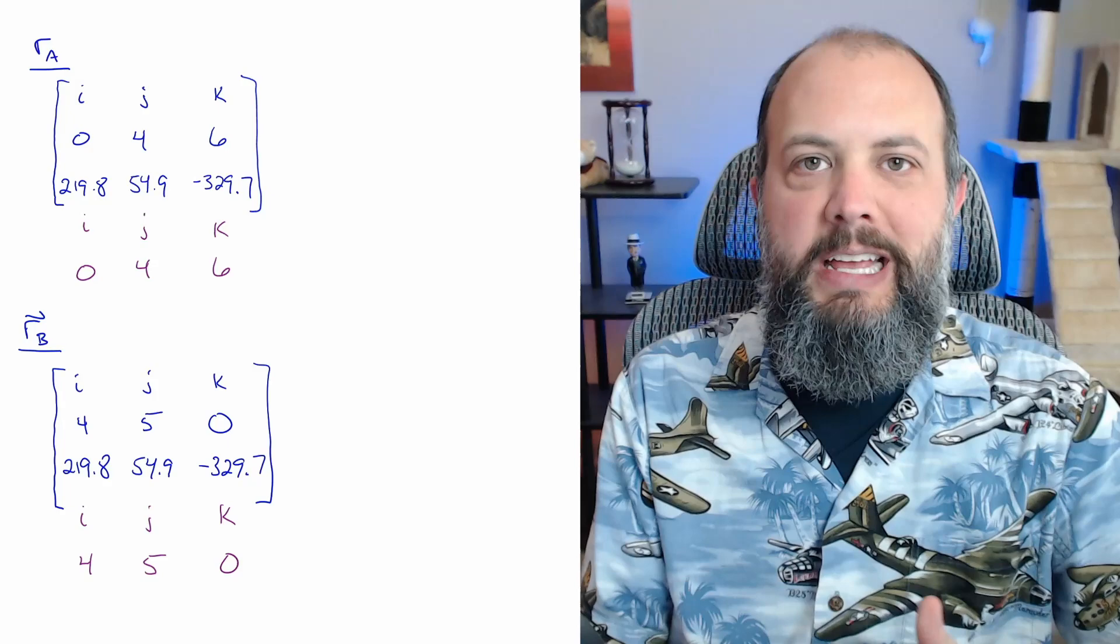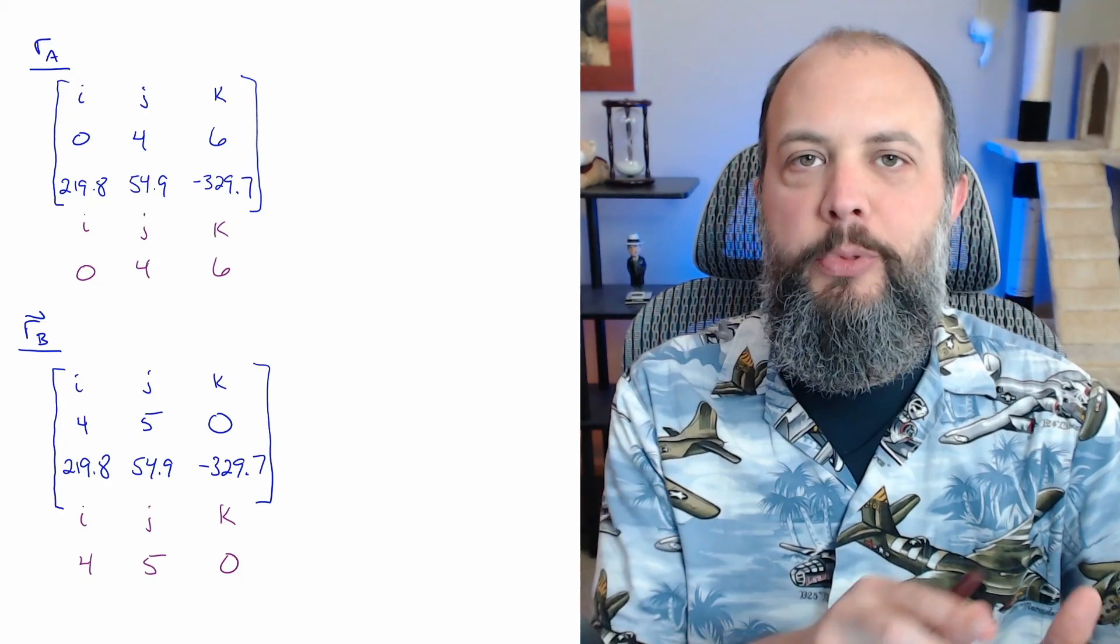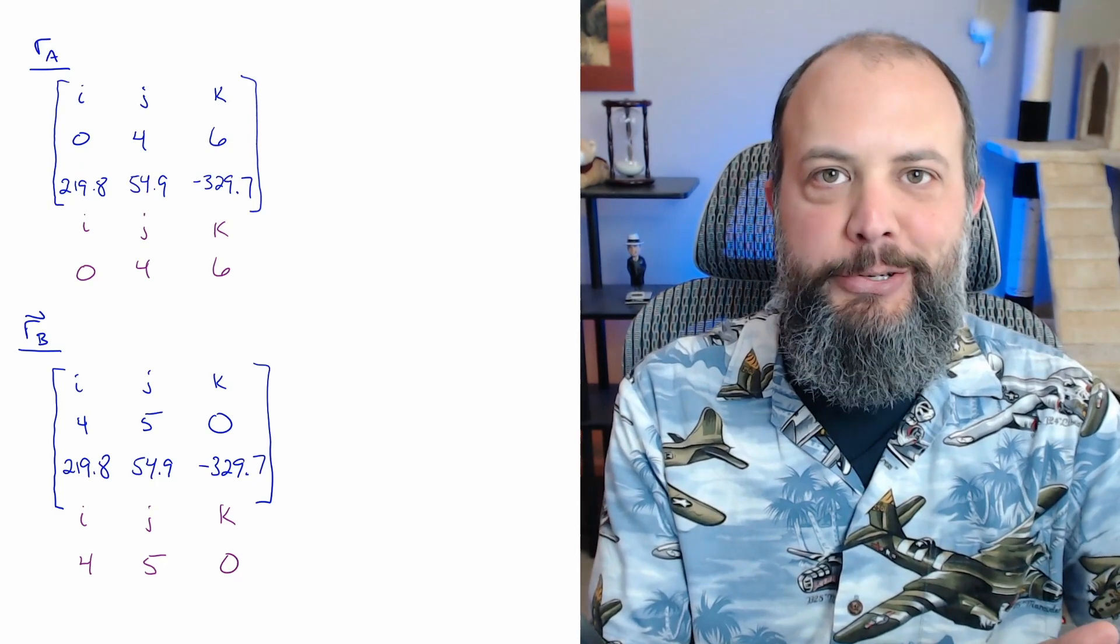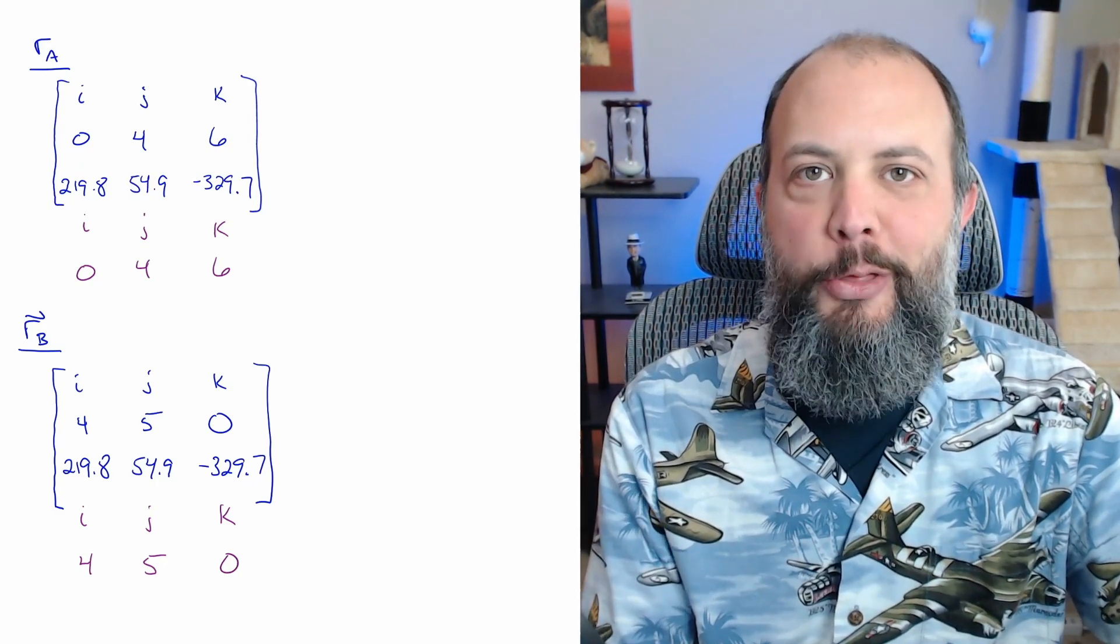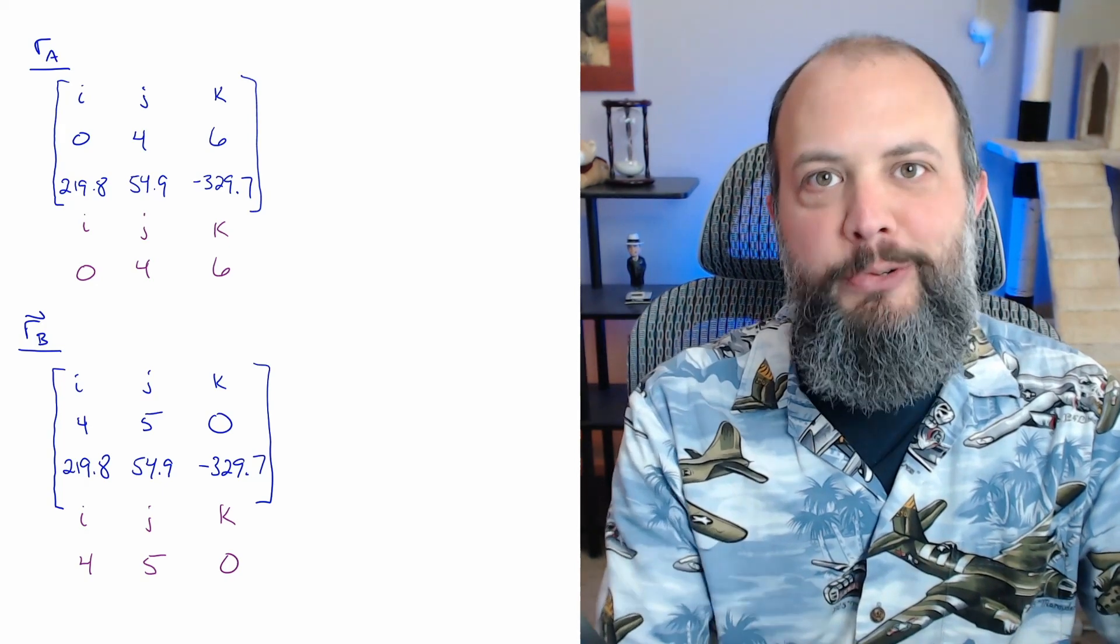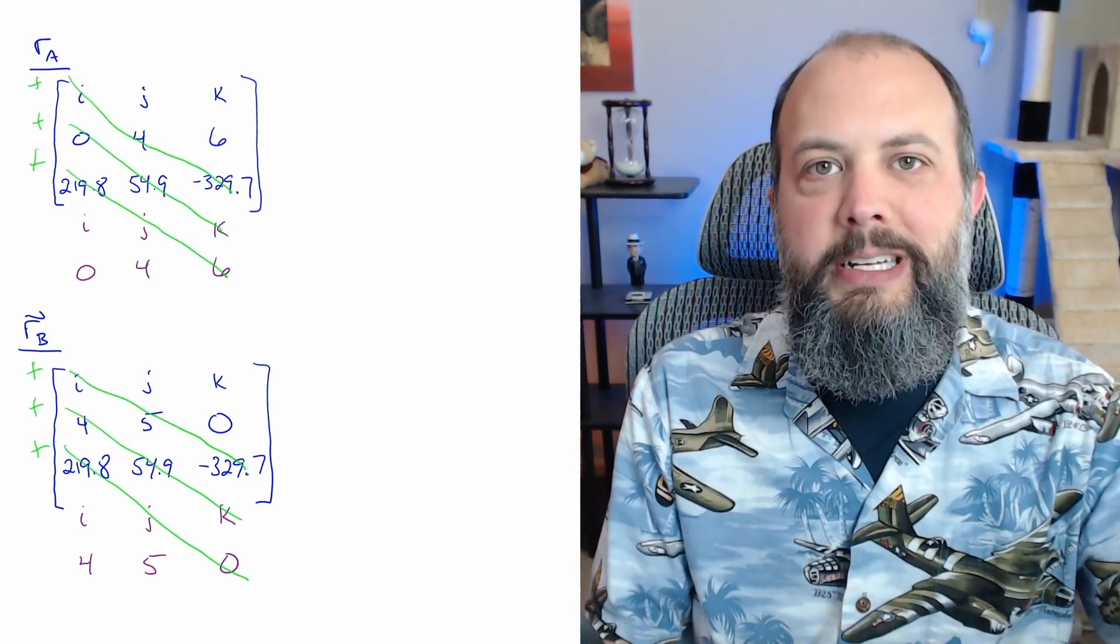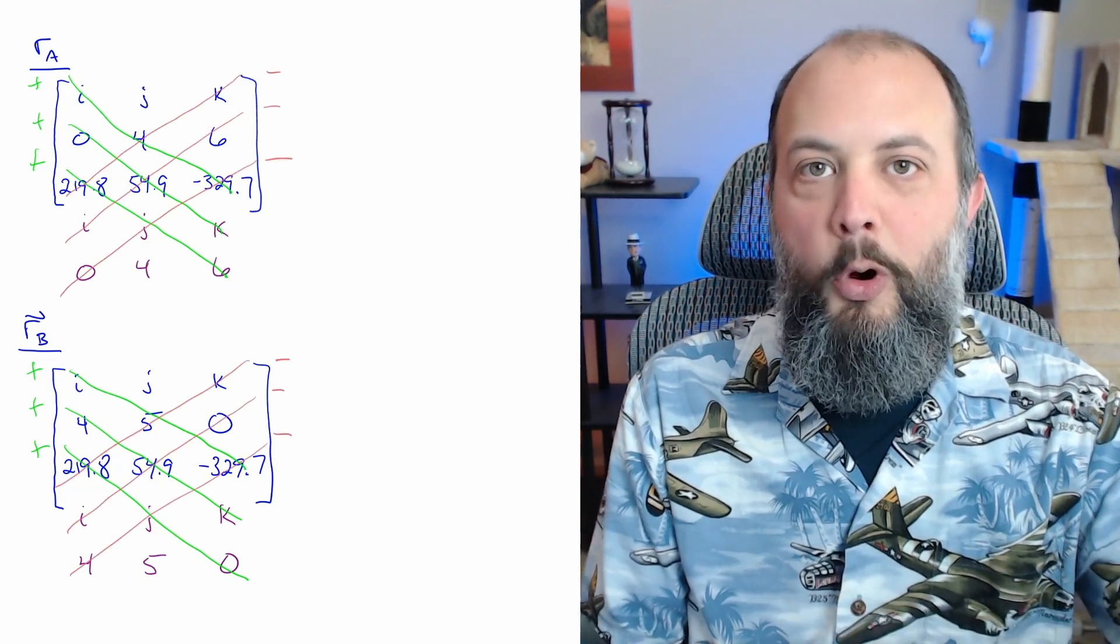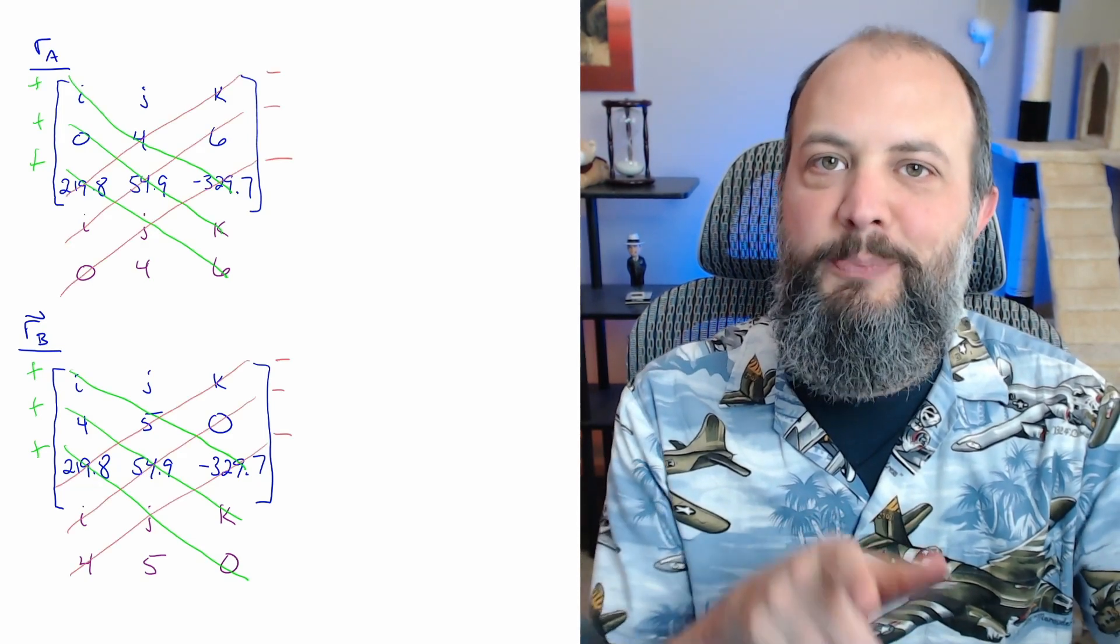So the cross product starts by writing out your three dimensional matrix with i, j, k, your coordinate system along the top, then the position vector in the second row, your force in the third row, and then the cool method for cross product requires repeating the top two rows again right beneath it. Draw three diagonal lines, these terms will all be added together, and then three more diagonal lines, these terms will all be subtracted.